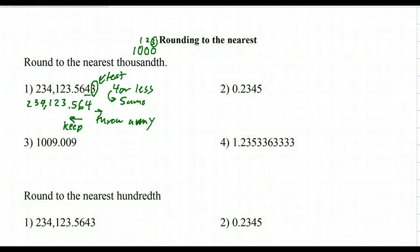Okay, so let's try one more, number two. You want to underline the four, circle the five. Now that's a five or more, which means we increase the four to a five, and we keep everything to the left, throw everything to the right away.